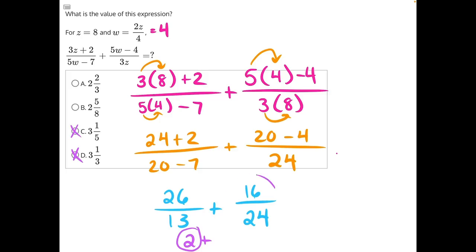To simplify this fraction, we need to divide the numerator and denominator by the greatest common factor, which in this case would be 8. 16 divided by 8 will give us 2. And 24 divided by 8 will give us 3. So all in all, we would have 2 plus 2 thirds, which would give us 2 and 2 thirds, making answer choice A our correct answer.